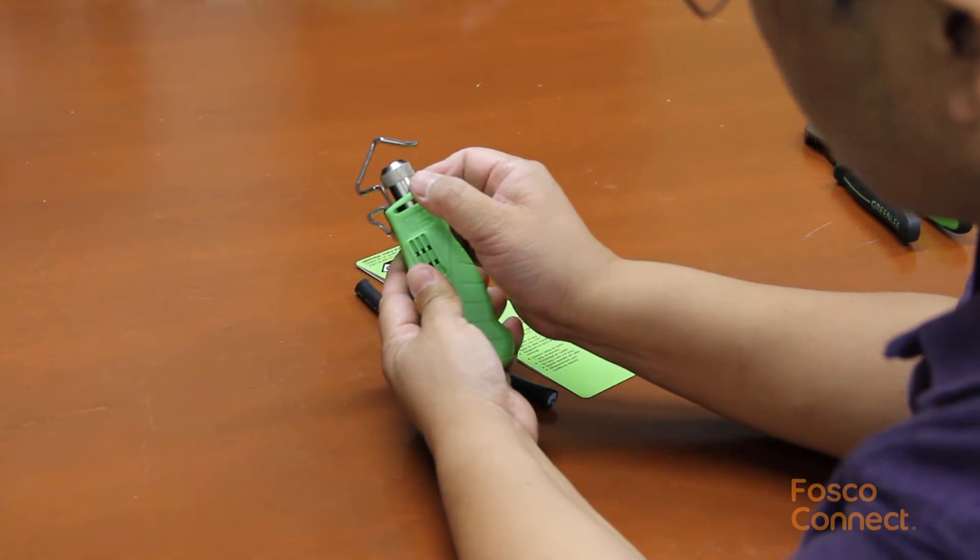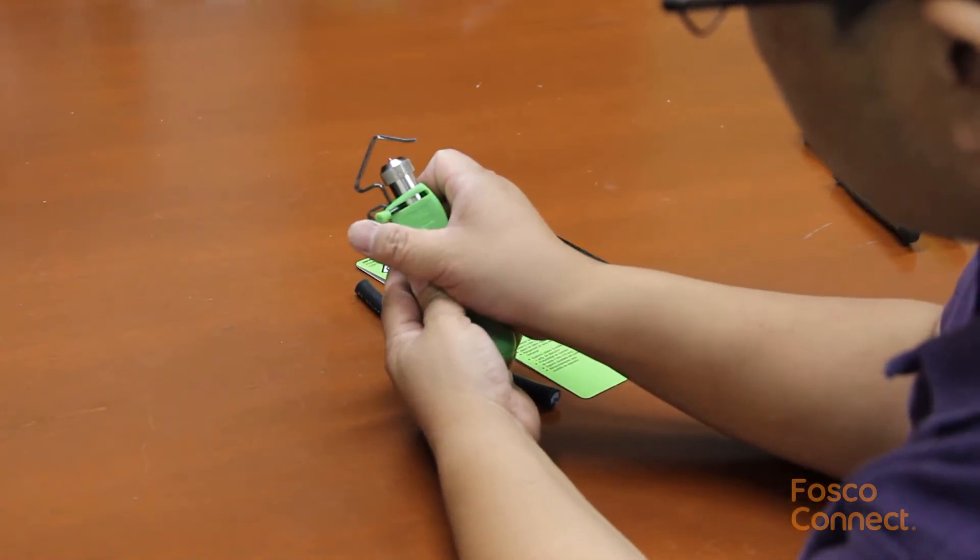You can turn the blade from ring cut to longitudinal by turning the blade 90 degrees with this lever.